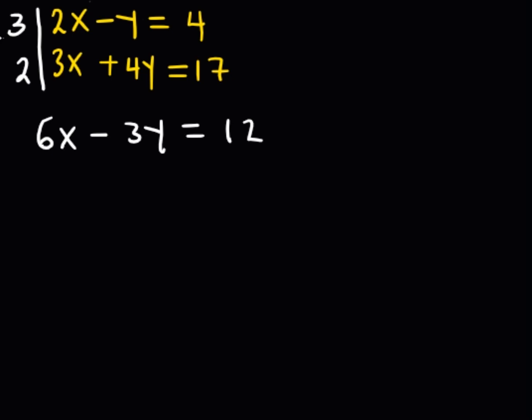2 times 3x, we obtain 6x. 2 times 4y, we get 8y. And everything is equal to 2 times 17, we get 34.